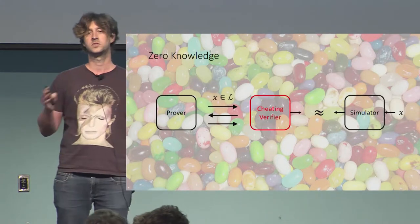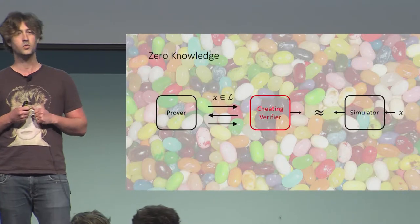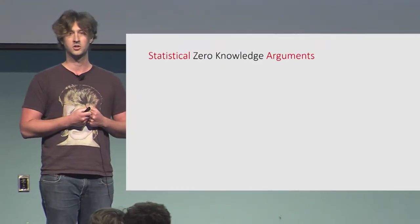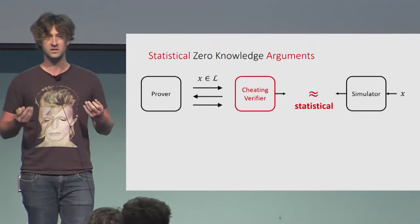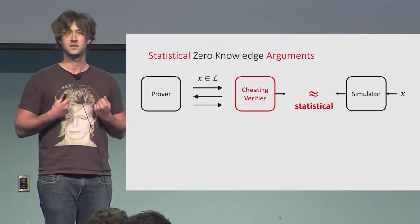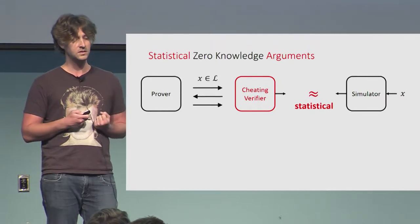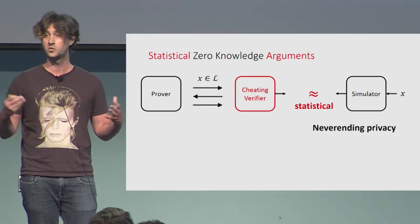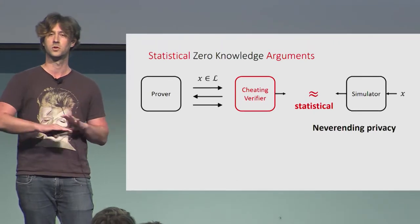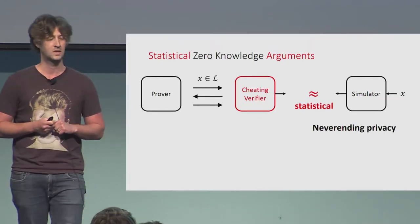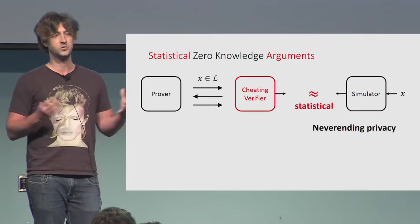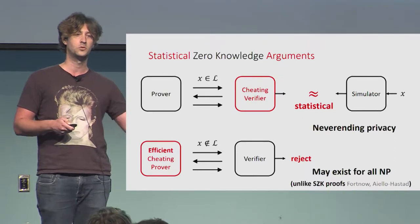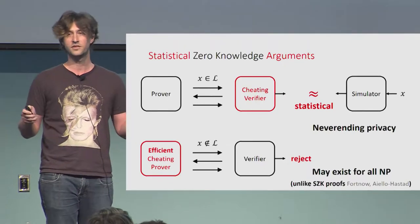As you may know, this notion comes in many colors and flavors. In this work, we consider statistical zero-knowledge arguments. Here we really want that the simulated interaction is statistically indistinguishable from a real interaction. This is a very appealing property in that it provides some sort of everlasting privacy: even if the verifier stores the interaction and post-processes it for unbounded time, it still doesn't gain any meaningful information. Statistical zero-knowledge for general NP languages is unlikely to also be statistically sound, which is why we relax soundness to hold only against computationally-bounded provers.